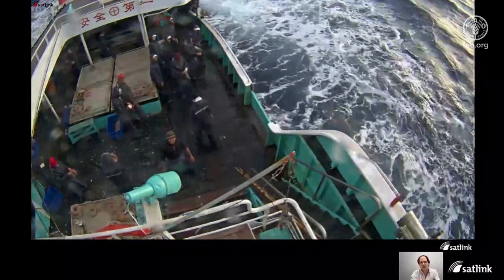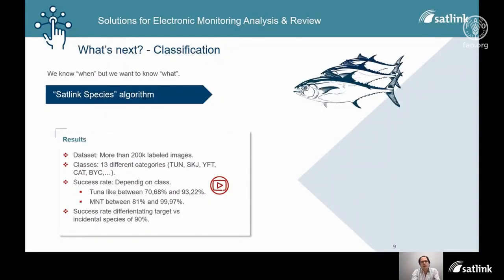This is detecting fish — it's not classifying it. So the challenge is: what's next? It would be classification. We know when a fish is on board the deck, but we want to know the species. This is the Sattling species algorithm that we are just finishing, and we have all these results here.